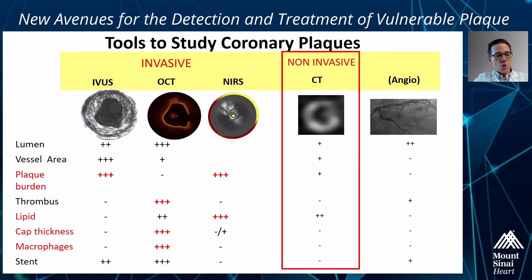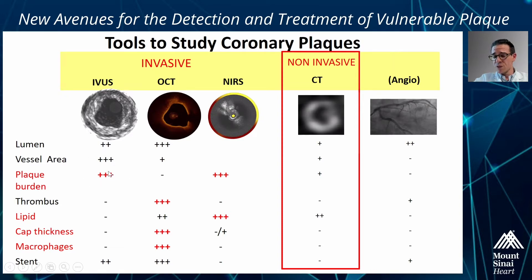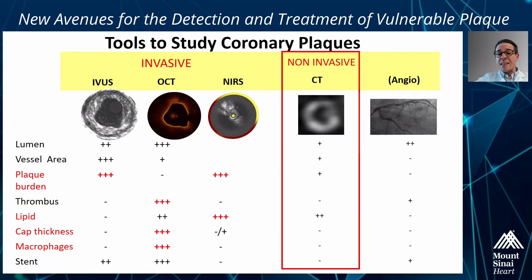Tools to study these plaques in vivo are available. You are already familiar with grayscale IVUS, which is a great tool to mainly measure plaque burden — one of the vulnerability characteristics we clearly know since PROSPECT. You're also familiar with near-infrared spectroscopy, which is an FDA-approved method to determine the lipid pools, or the lipid core.